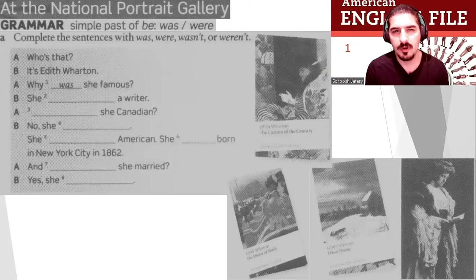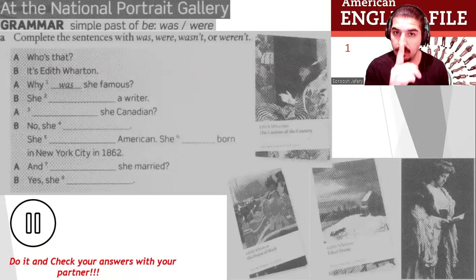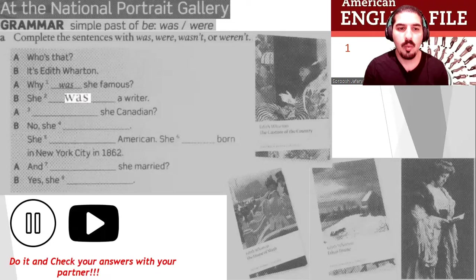Now, simple past of be: was and were. Complete the sentences with was, were, wasn't, or weren't. For example: Who's that? It's Edith Wharton. Why was she famous? Stop the video and do it. Now check with your partner.